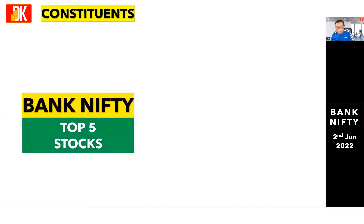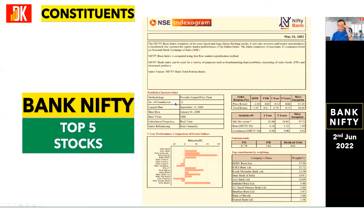Let us check the broader constitution of Bank Nifty as an index. The top 5 stocks of Bank Nifty constitute 85% of the weightage. Those stocks are HDFC Bank, ICICI Bank, Kotak Bank, State Bank of India, and Axis Bank. The highest weightage is HDFC Bank at around 27.58%, next is ICICI Bank at 23.72%, then Kotak Bank at 12.3%, SBI at 10.81%, and Axis Bank at 10.69%. Out of 12 constituents, these top 5 constitute 85% of the weightage and will finally decide the move in Bank Nifty.